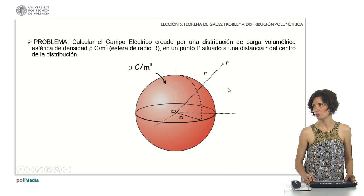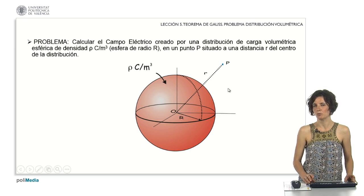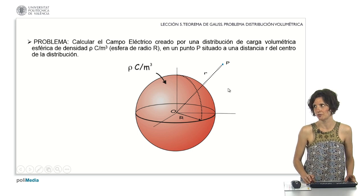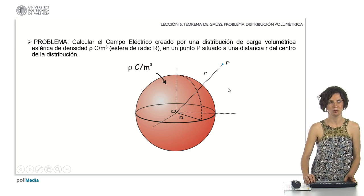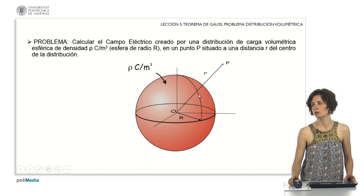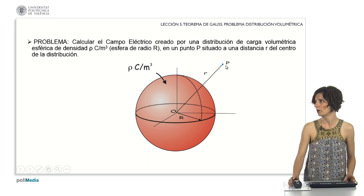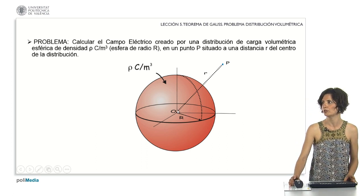In this particular case, we are going to calculate the electric field created by a spherical volumetric charge distribution of density rho coulombs per cubic meter. It is a sphere of radius R (capital R), and we are going to calculate the electric field at a point P located at a distance r (lowercase) from the center of the distribution.